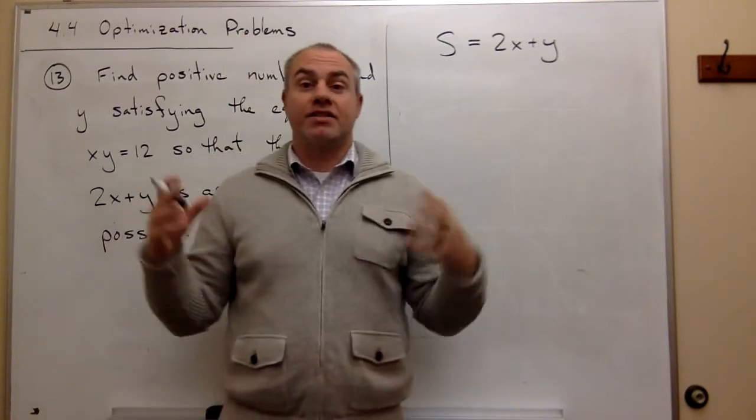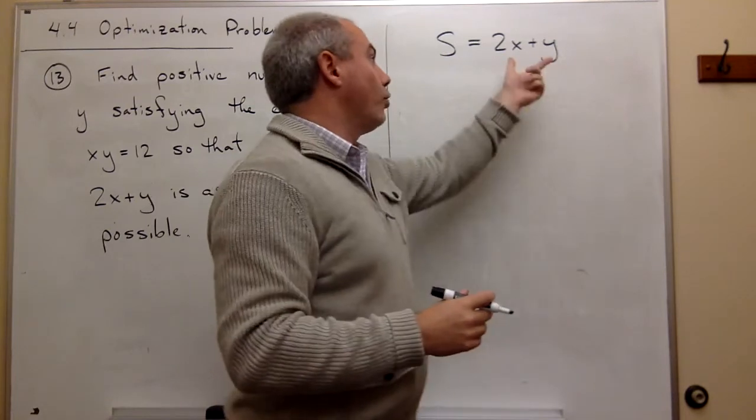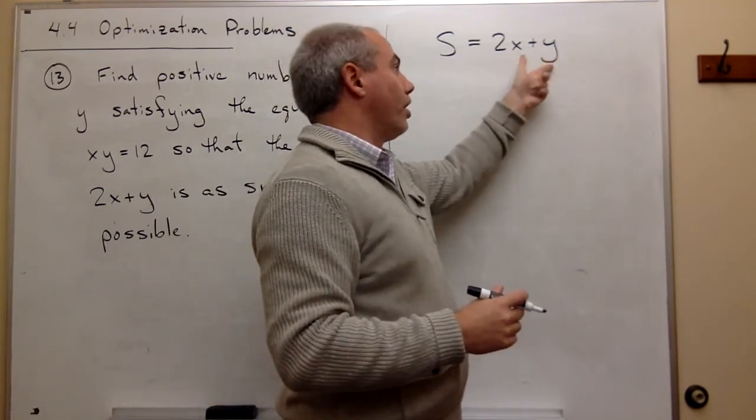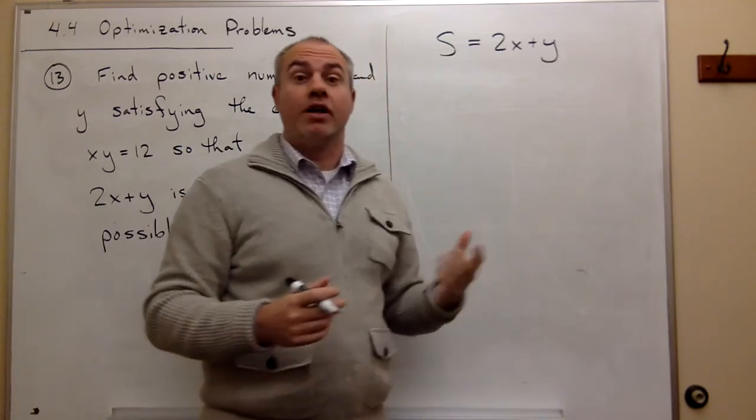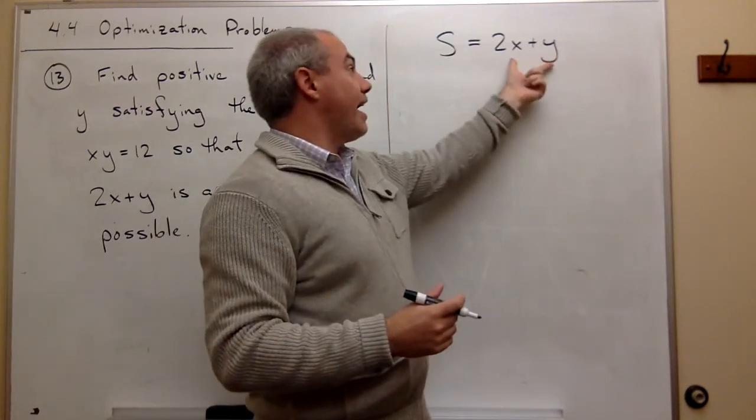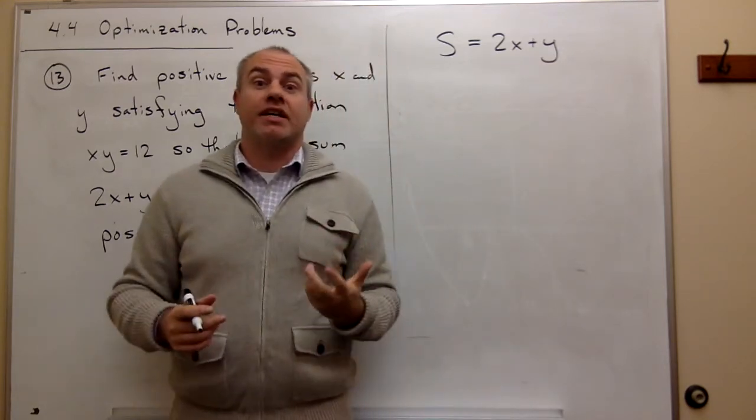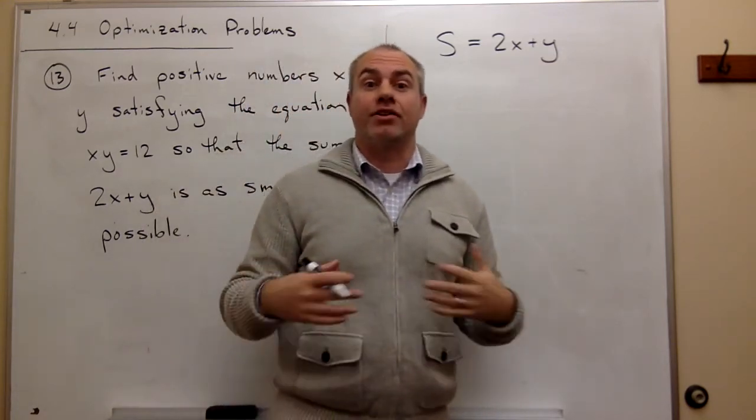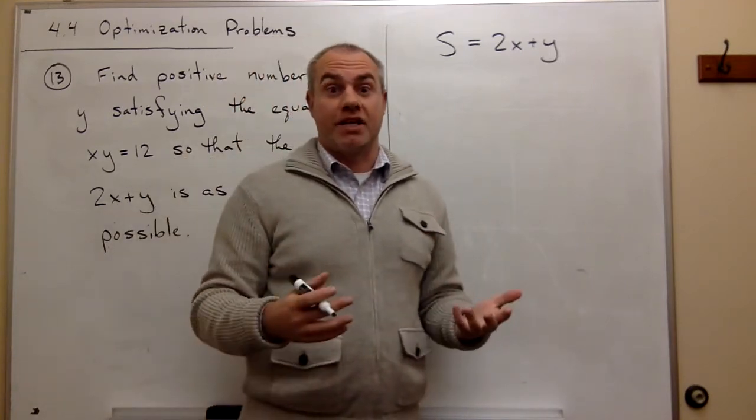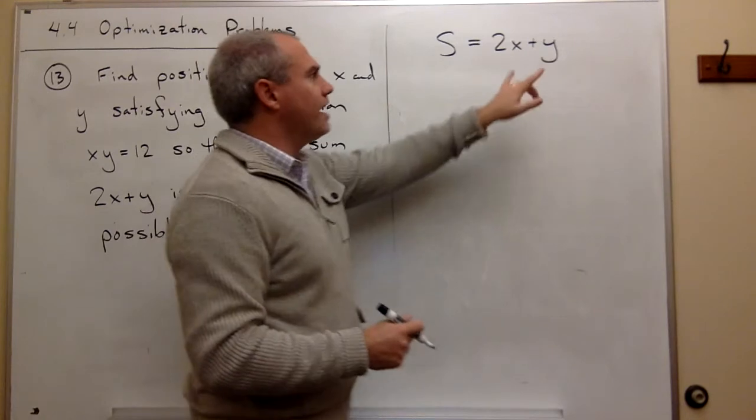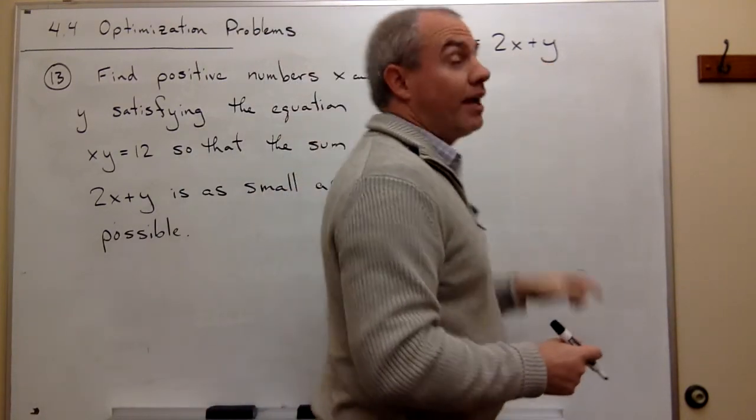And so S, which is equal to 2x + y, I want to make that as small as possible. Now the problem here is that I have more than one variable on the right hand side. I've got S which is what I'm trying to make small, and ideally I'd like S to be in terms of one variable, not two, because as soon as I get S into one variable then I can use all my knowledge of calculus and finding maxes and mins on it.